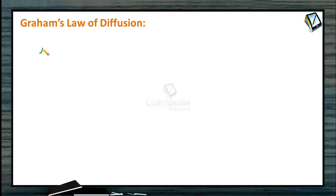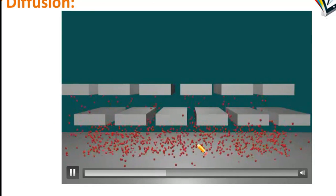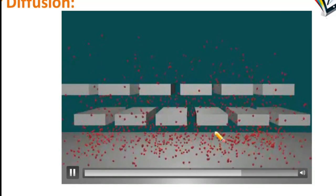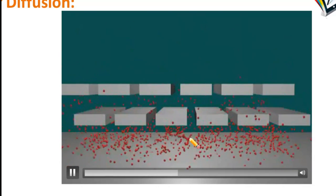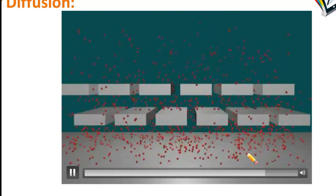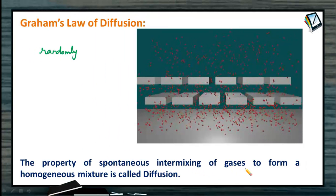Irrespective of the earth's gravitational force, these gas molecules are moving randomly and occupying the entire available space. That process is called diffusion. You can see this animation to understand that — these gas molecules are trying to occupy the entire available space. They are not stationary; they are moving randomly. This property of spontaneous intermixing of gases to form a homogeneous mixture is called diffusion.